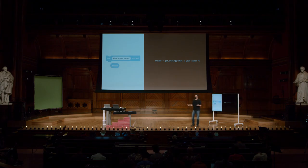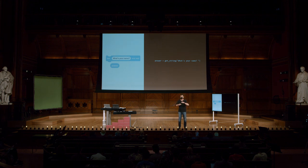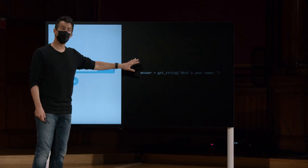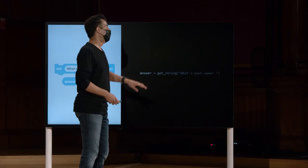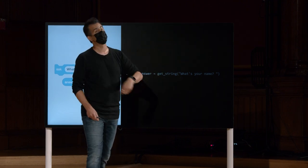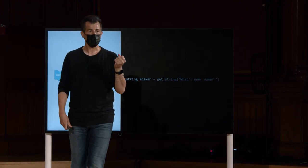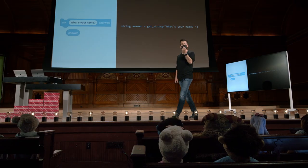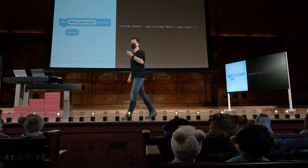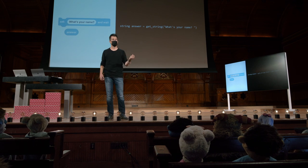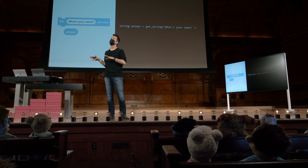Infelizmente, ainda não terminamos com C. É aqui que fica um pouco irritante no início, onde o Scratch apenas nos deixava expressar novas ideias sem tanta sintaxe. Em C, quando você tem uma variável, você não apenas dá a ela um nome como fazia no Scratch. Você também tem que dizer ao computador com antecedência que tipo de valor ele está armazenando. String é um desses tipos de valor. Int, para inteiro, será outro, e ainda mais do que isso veremos ainda hoje.